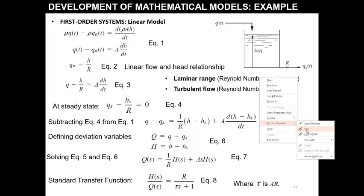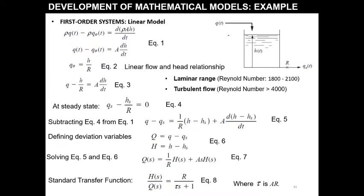Starting with the modeling of a single tank system. We have a volumetric flow rate Q_in and Q_out, both in meter cube per second. This is a linear valve, meaning the relationship between Q_naught and the height H of the tank is linear: Q_naught equals H divided by R.